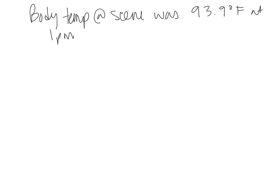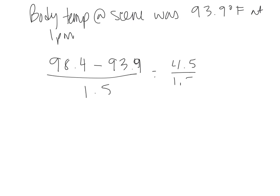Example two: body temperature at the scene was 93.9°F at 1 PM. So we do 98.4 minus 93.9 divided by 1.5. That gives us 4.5 divided by 1.5, which equals three hours since death.